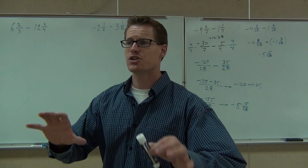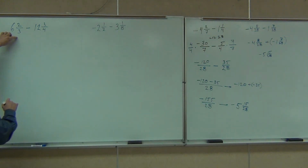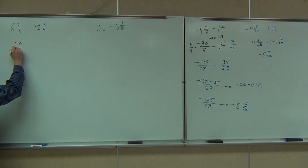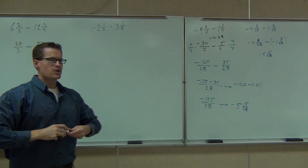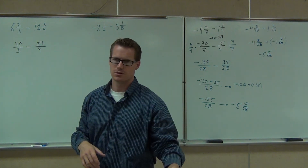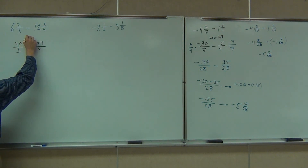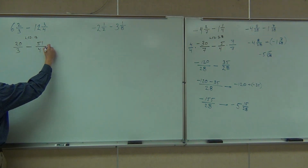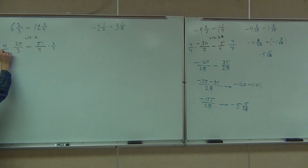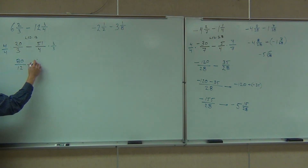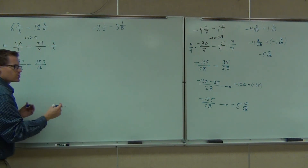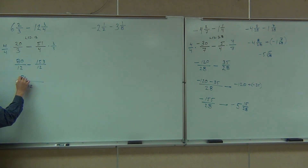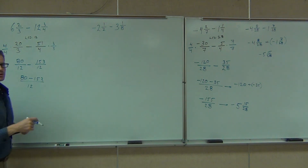We're changing these into improper fraction form. So 6 and 2/3 becomes 20 over 3, and 12 and 3/4 becomes 51 over 4. Our LCD is 12. Multiplying by 4/4 and 3/3, we get 80 over 12 minus 153 over 12. Remember the addition rule — change minus to plus and negative. 80 minus 153 gives you negative 73 over 12.